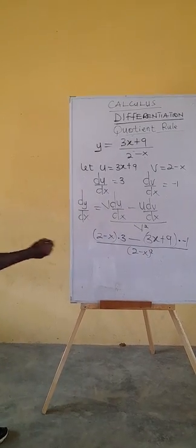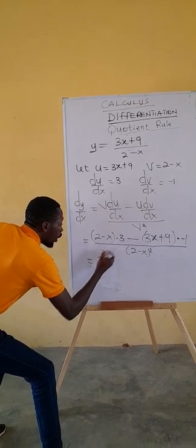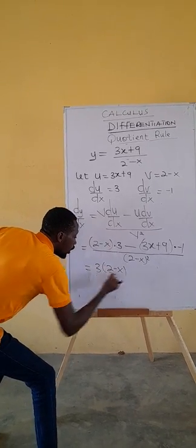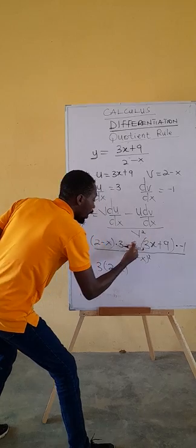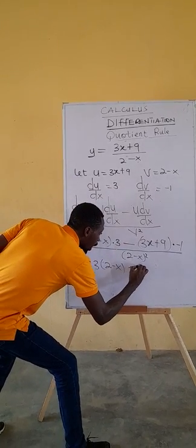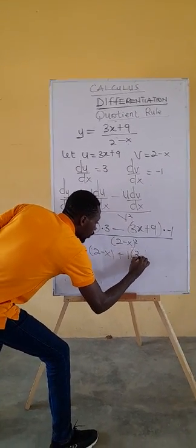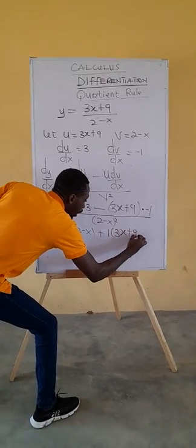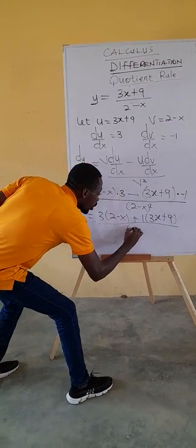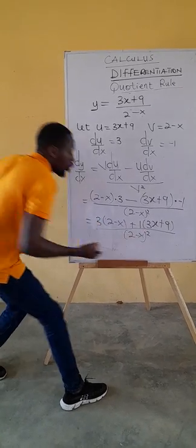so we can work this out. We bring the 3 forward: v times du/dx gives us 3 times (2 minus x). Then minus u times dv/dx: u is (3x plus 9) multiplied by minus 1, which becomes plus (3x plus 9), all over (2 minus x) squared.